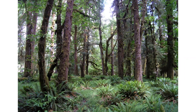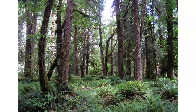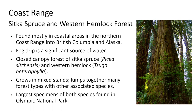These beautiful forests with giant ferns and mosses — Sitka spruce and western hemlock are found in the coast areas of the Coast Range and up into British Columbia and Alaska. Fog drip is another very important source of water here. We have closed canopy forests of Sitka spruce, Picea sitchensis, and western hemlock, Tsuga heterophylla. These forests tend to grow in mixed stands with many other species, including Douglas fir. The biggest specimens of each species are found in Olympic National Park, where rainfall is highest.